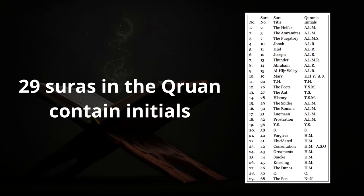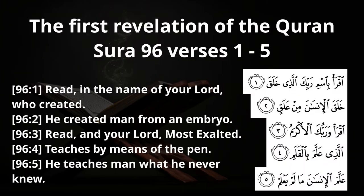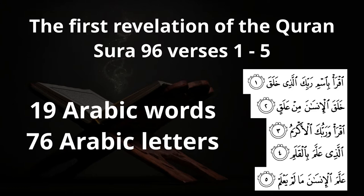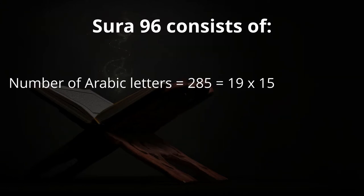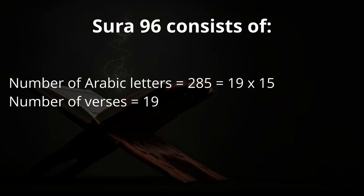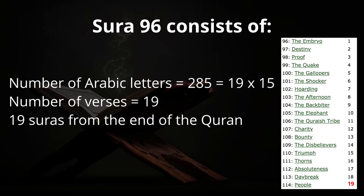The first revelation delivered to Prophet Muhammad is Surah 96 verses 1 through 5: 'Read in the name of your Lord who created; he created man from an embryo. Read, your Lord most exalted teaches by means of the pen; he teaches man what he never knew.' These five verses consist of 19 words and 76 letters — 76 is 19 times 4. The total letters in the entire chapter 96 are 285 — 19 times 15. This chapter has 19 verses, and it sits on top of the last 19 surahs of the Quran inclusive.